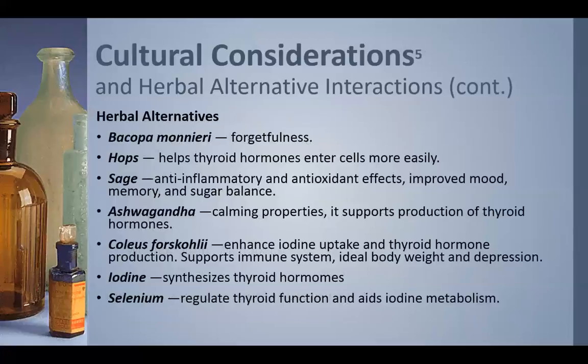Herbal alternatives focus on both symptoms and helping the thyroid take up iodine and produce hormones. Those used mostly for symptoms include bacopa monnieri and sage; sage also helps with blood sugar balance, which can be a big problem for these patients. Coleus forskohlii helps with body weight and depression. Often these herbal alternatives are taken as combination formulas.